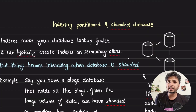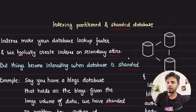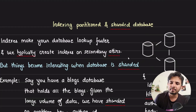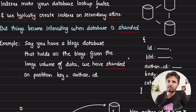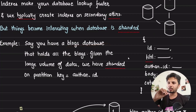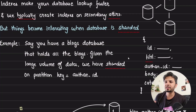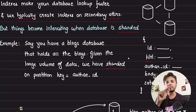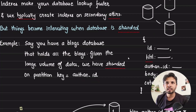Indexes make your database lookups faster, and we typically create indexes on secondary attributes. Things become really interesting when your database is sharded and partitioned. When you have a large volume of data and one node is not able to handle the load, you shard the database and partition the data across multiple data nodes. Let's take a practical example using a blogs database — say you're building a Medium-like application with tons of blogs published. We pick a partition key, say author_id, on the basis of which we split the data.